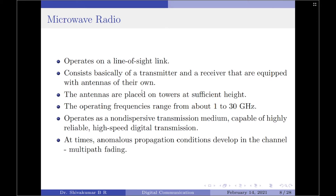At other times, however, anomalous propagation conditions develop in the channel due to meteorological variations, causing severe degradation in the radio system's performance. These conditions manifest themselves in a phenomenon known as multipath fading. The term multipath refers to the fact that propagation between the transmitter and receiver takes place along several paths of different electrical lengths. The receiver sees a weighted sum of delayed replicas of the transmitted signal from these multiple paths, interfering constructively or destructively. Consequently, the received signal experiences fading — its amplitude varies with time. When replicas arrive in phase they reinforce each other; when they arrive in anti-phase, they cancel each other. Provisions must therefore be made to overcome the effects of multipath fading.